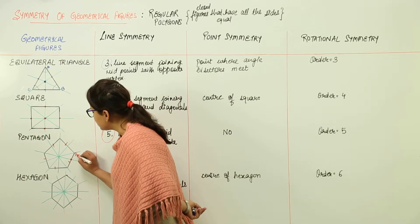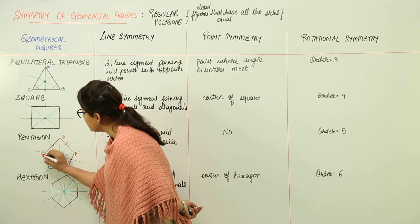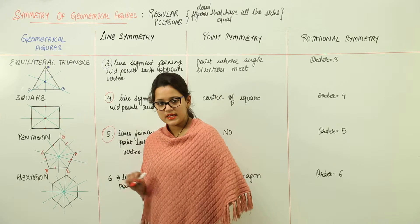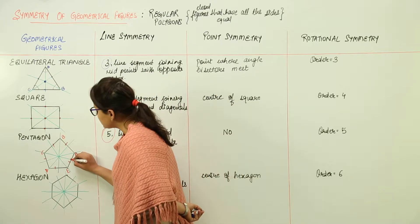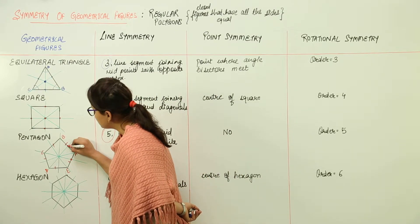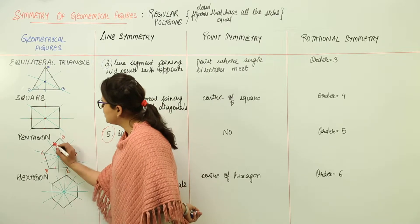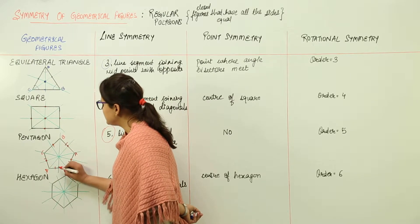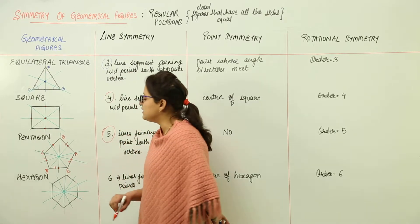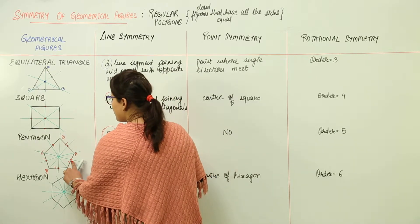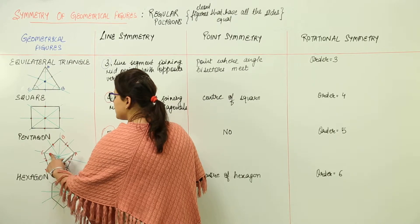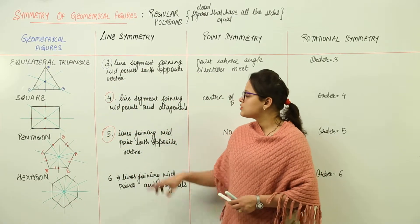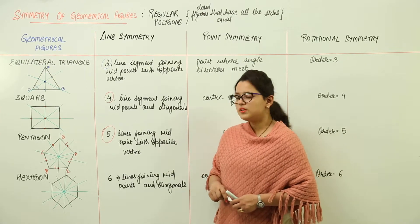Let us label the vertices of the pentagon: A, B, C, D, E. The midpoint of side AE, the midpoint of AB, the midpoint of BC, the midpoint of CD, and the midpoint of DE. The lines joining each midpoint with its opposite vertex are the lines of symmetry for the pentagon. So it has 5 lines of symmetry.